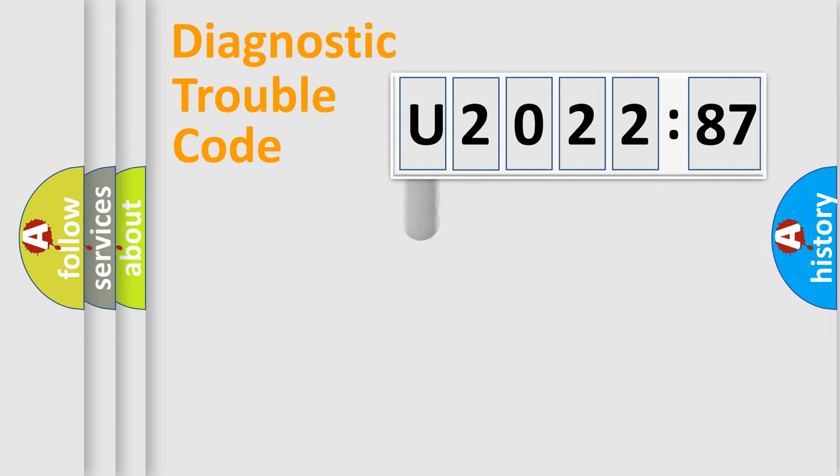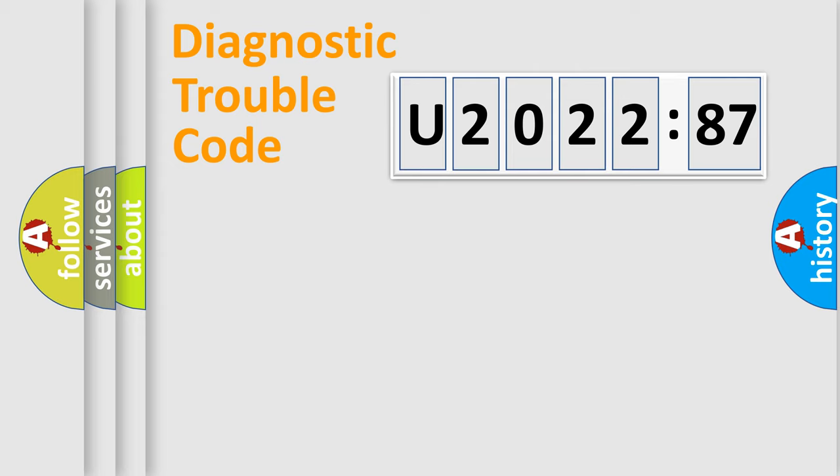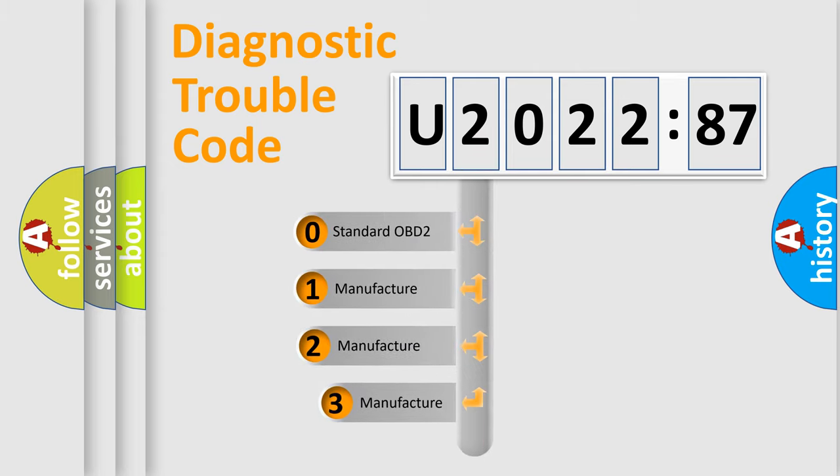First, let's look at the history of diagnostic fault code composition according to the OBD2 protocol, which is unified for all automakers since 2000. We divide the electric system of automobile into the four basic units: Powertrain, Body, Chassis, Network. This distribution is defined in the first character code.